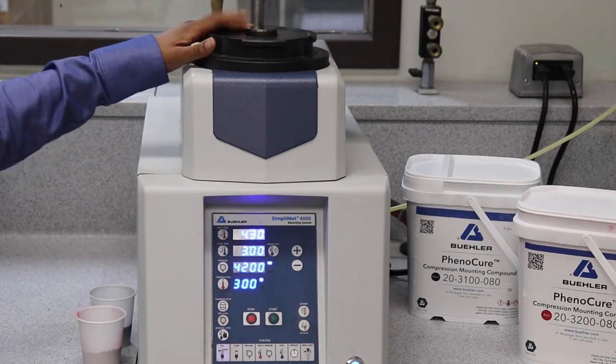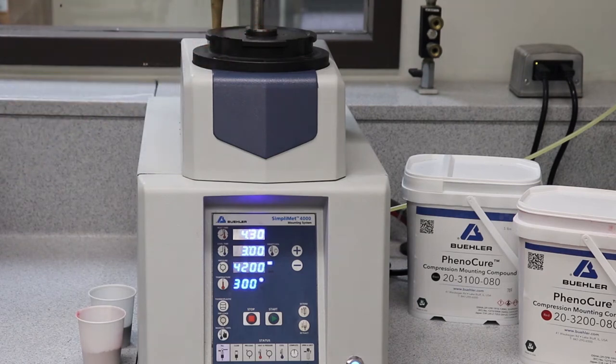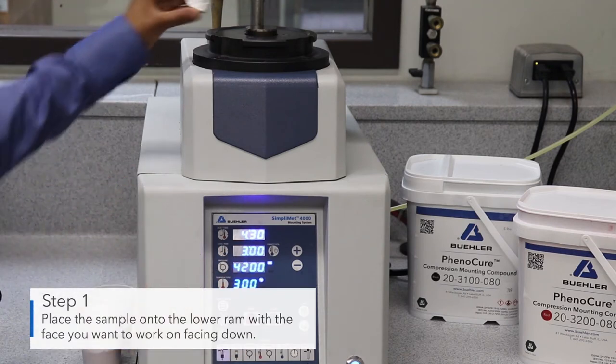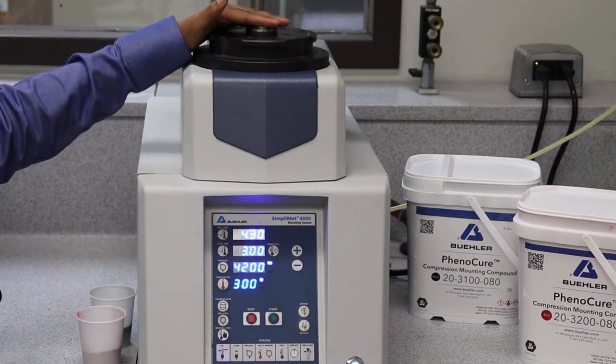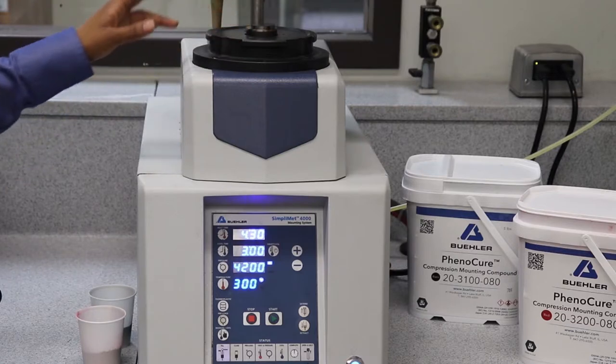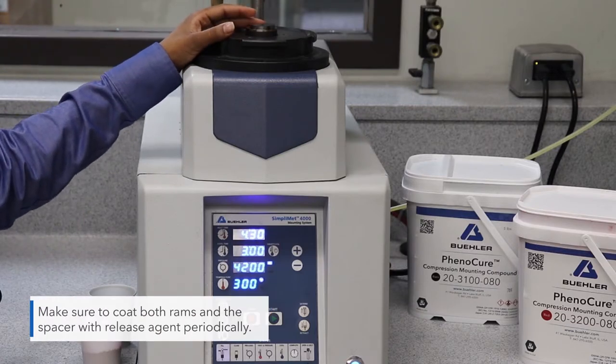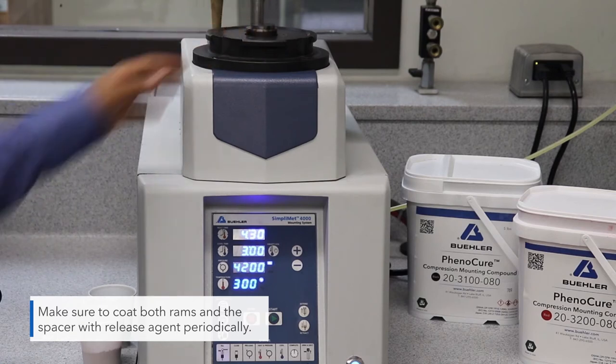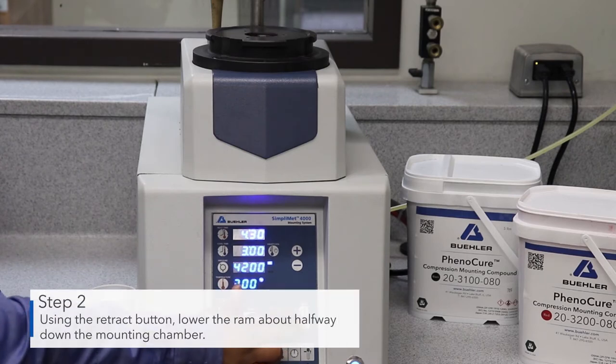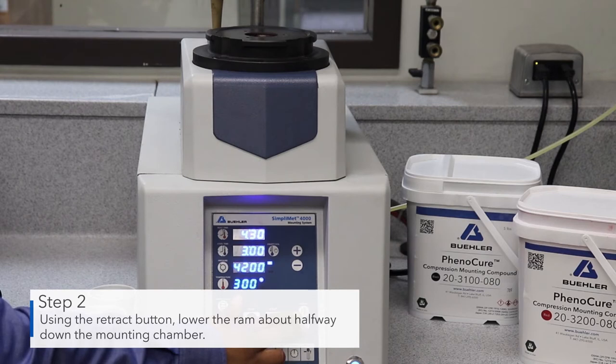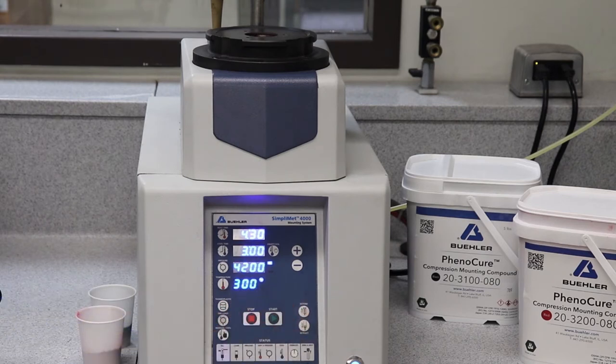Now we have the lower ram already up. All you have to do is place your sample. The lower ram has already been coated in release agent so that the samples don't stick. Then you lower the ram about halfway into the chamber so that you can pour your mounting media on top of it.